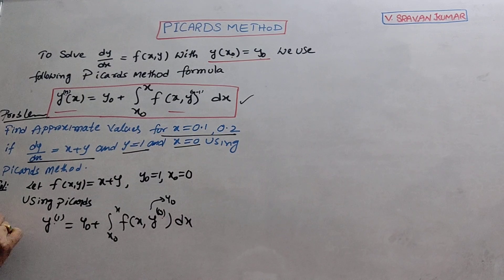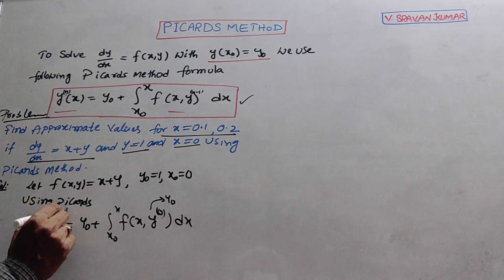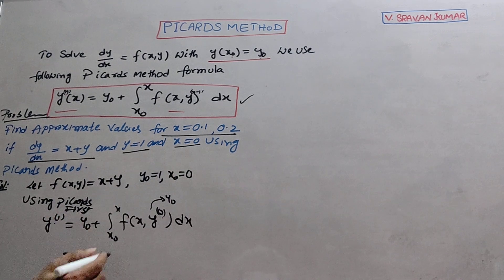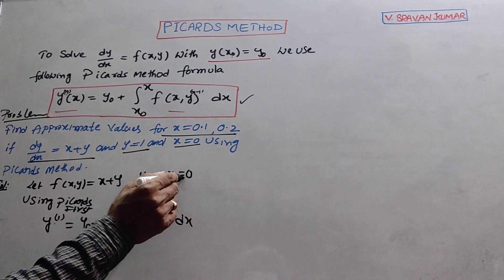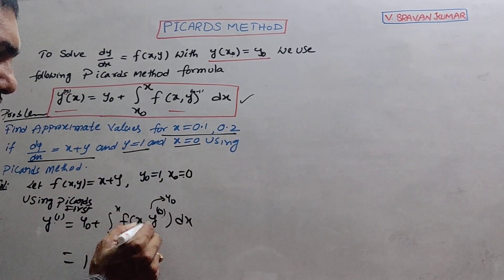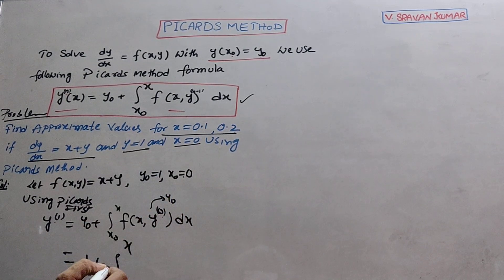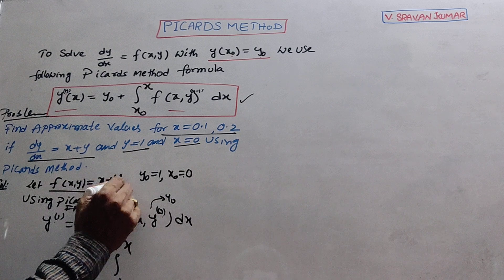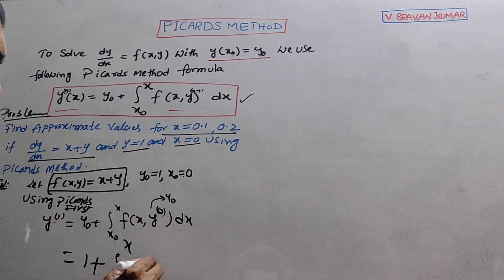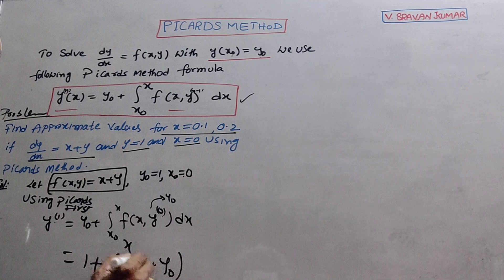So x₀, y₀ given, f(x,y) given. Using Picard's, this is the formula to find first approximation. Here y₀ you know what is y₀, 1. x₀ you know 0. f(x, y⁰) means y⁰ is stated as y₀. f(x,y) is x plus y, and f(x, y⁰) is x plus y₀.